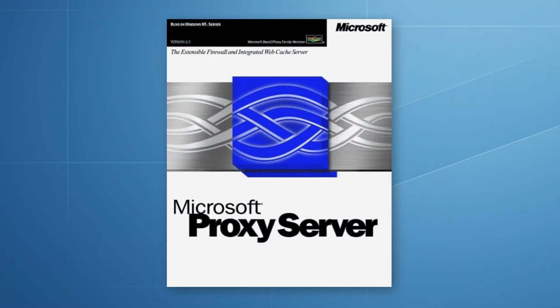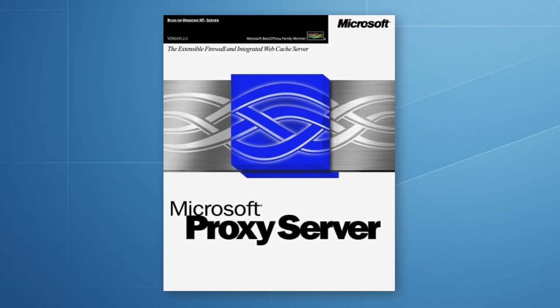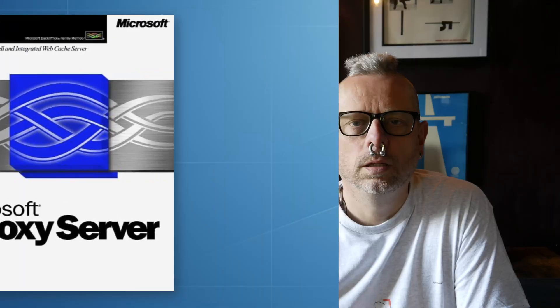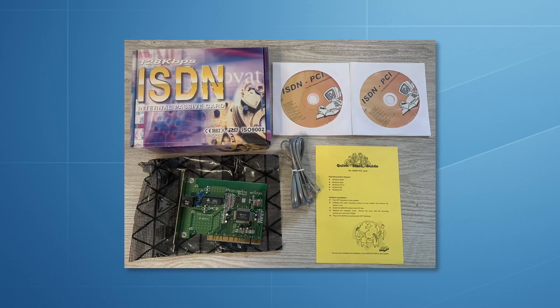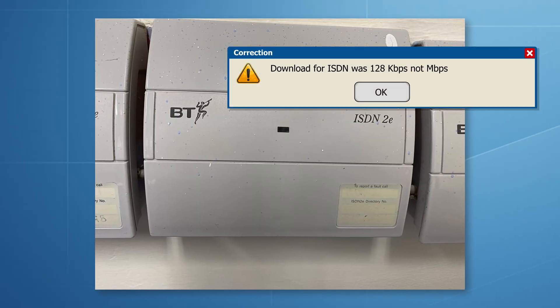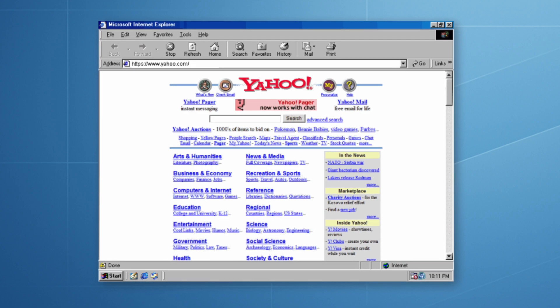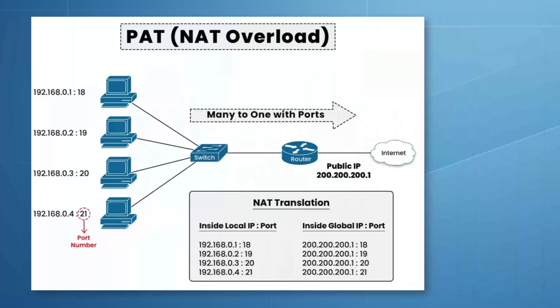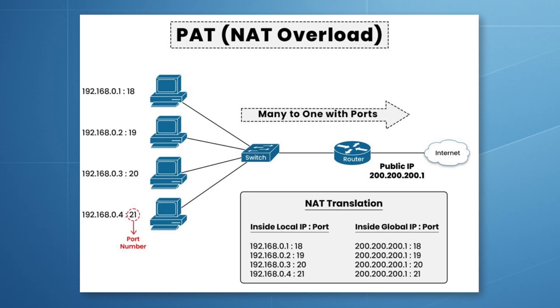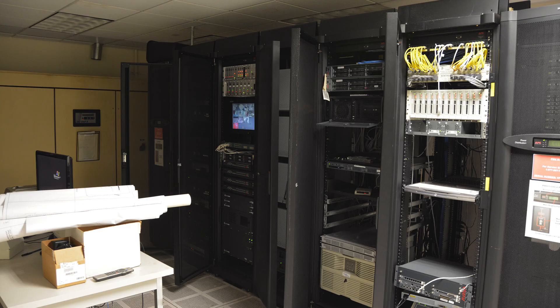Then came Proxy Server 2.0 later that year in December — a bit more advanced, with better NT authentication and support for multiple protocols and packet filtering. I first used this when it arrived in Back Office Server 4.0 in January 1999. It was usually coupled with an ISDN card in those days — two channels, 64 kilobits each — enabling you to get 128 kilobits download speed. It really was the first time that employees and businesses had access to the internet from their desktops, but it was really offering NAT translation with built-in NT authentication. It was a sign of what was coming though.